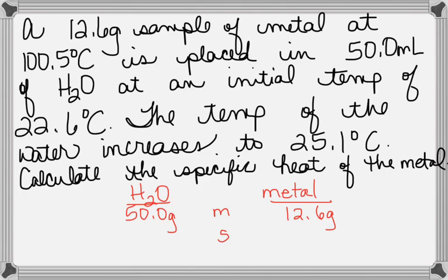Do you know the specific heat of the water or the specific heat of the metal? Water. You know, since it's water, you know it's 4.184 joules per gram degree Celsius. What about for the metal? That's what you're finding. Calculate the specific heat of the metal so you know you don't have that.